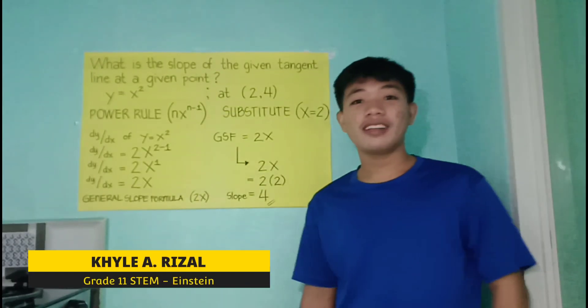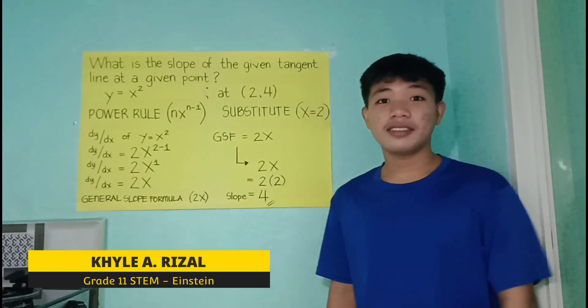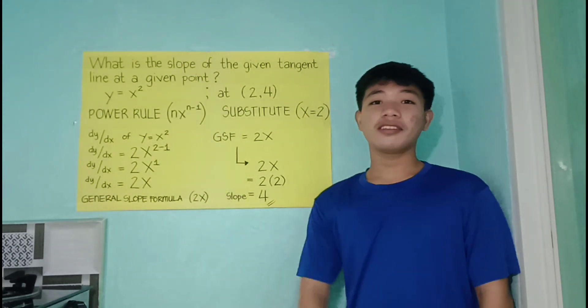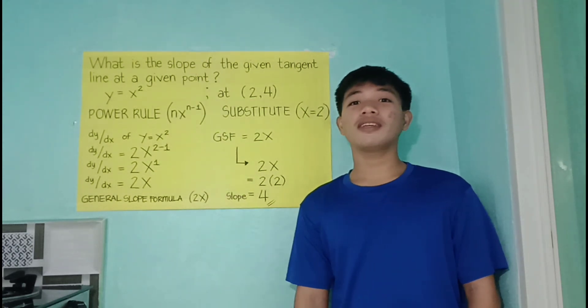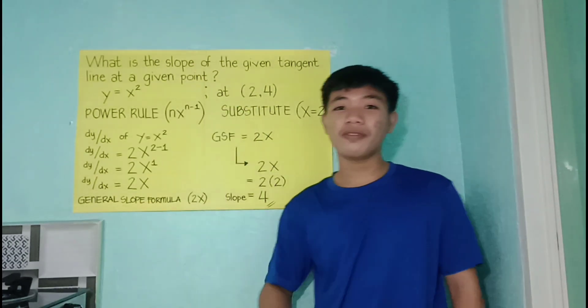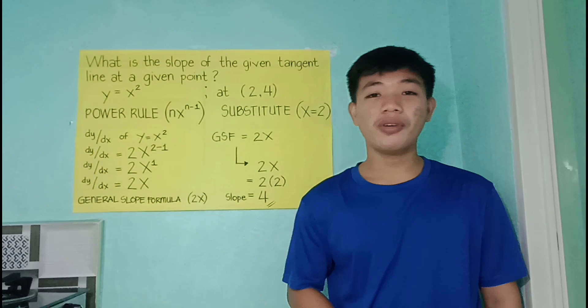Good day everyone. I'm Kyle Irizal from grade 11 STEM A Einstein and for today's video I'm given a slope problem under the lesson derivative of a tangent line. So the problem is what is the slope of the given tangent line at the given point?